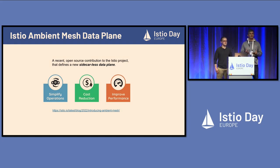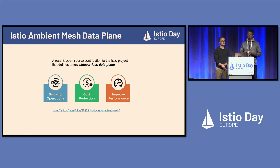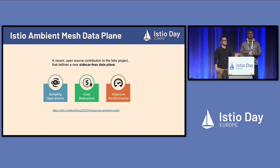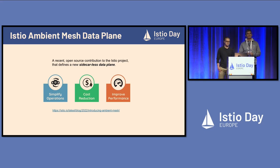Istio Ambient mesh is a sidecarless data plane option for the Istio service mesh. A big part of why we started building this was to simplify how we onboard applications and get workloads into the mesh without having to inject sidecars and make changes to deployments. It also addresses day-two operations like upgrades and CVE patching, solving pesky race conditions between the sidecar proxy and your workloads. By eliminating the sidecar we can make it easier to patch and upgrade Istio because it runs outside the application.